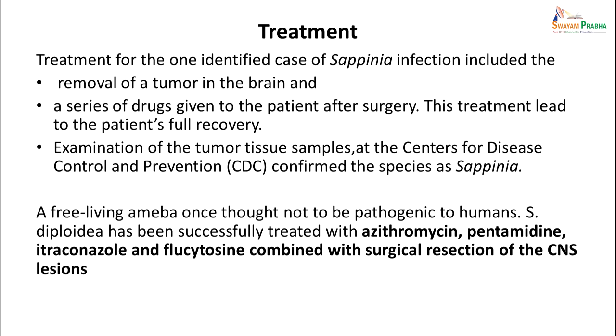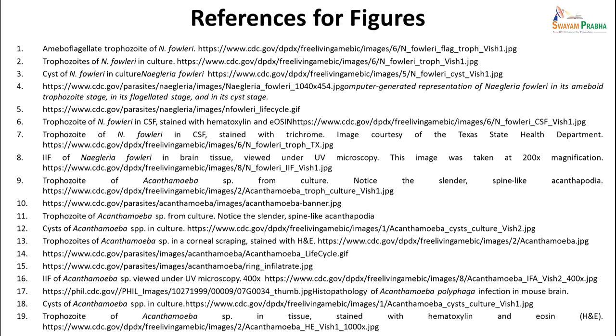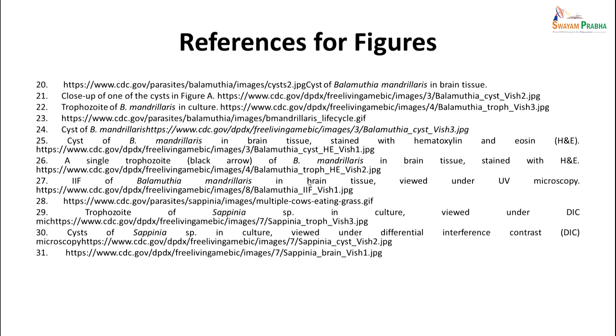Sappinia, once thought to be non-pathogenic, is now seen to be pathogenic but can be treated. The only important thing with all these infections is that they need to be diagnosed fast and treated fast; otherwise they are fatal and could lead to a lot of morbidity. Hence the importance of early suspicion. Thank you for listening patiently to this important lecture on free-living amoebae, which were not earlier thought to be pathogenic, but are now causing increasingly fatal infections of the brain and tissue that are difficult to treat. Thank you.